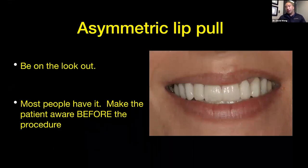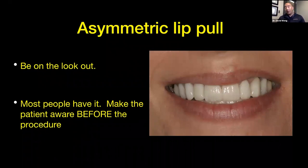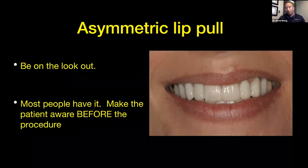One thing we always need to be aware of — and this is why I encourage dentists to take clinical photos, really learning how to take good clinical photos, or use a digital scanner — you want to look at that asymmetric lip pull. Most people have it, and it's important to identify that beforehand. If you tell them now, it's an explanation; if you tell them later, then you're making an excuse. So we want to gather as much information at the beginning.